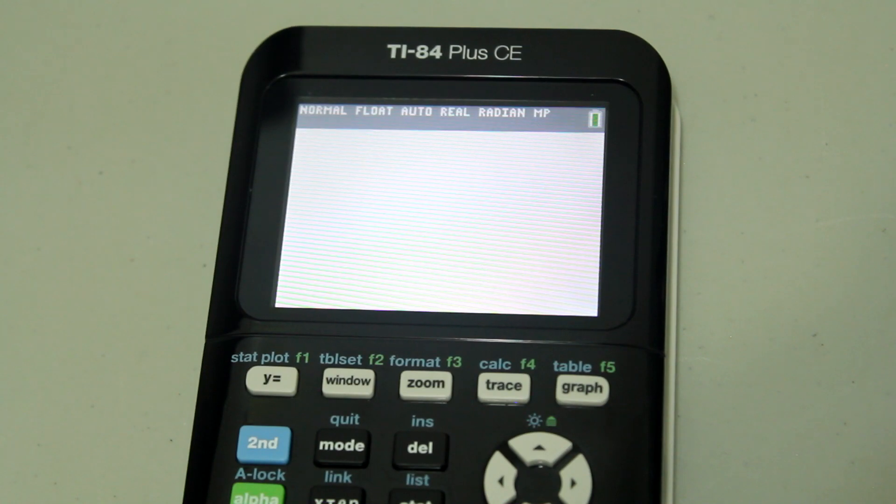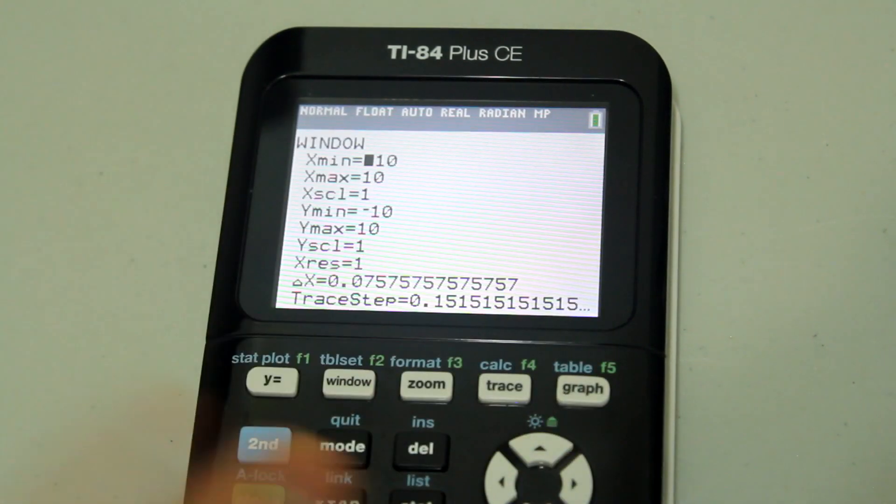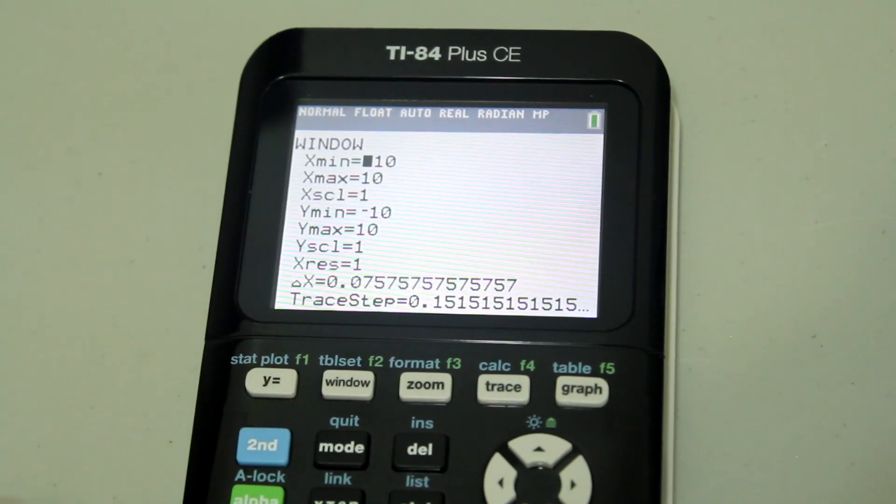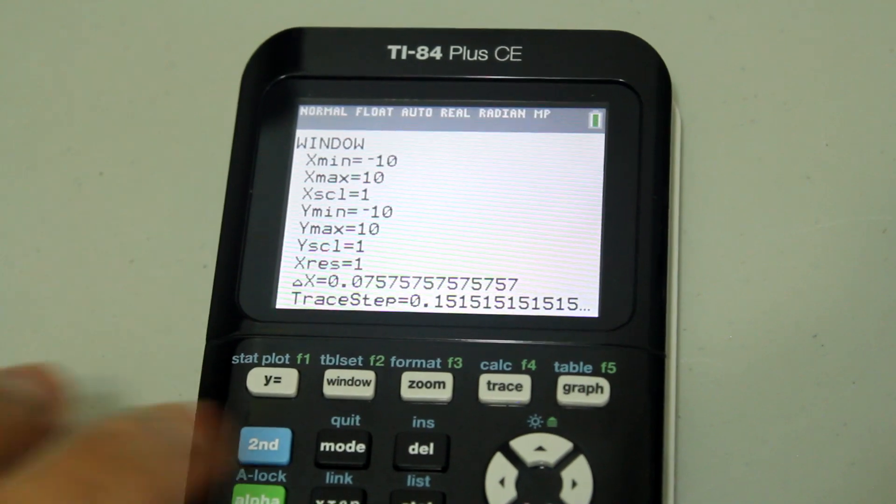Without further ado, let's get to it. First, let's just check the window. Right now I'm in a standard window setting from negative 10 to 10 in x values and negative 10 to 10 in y values.